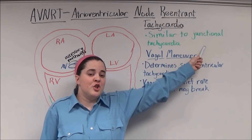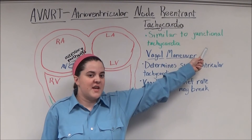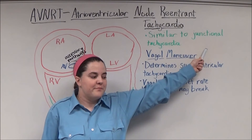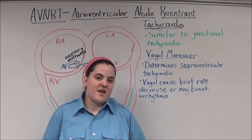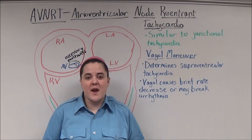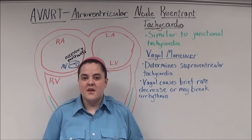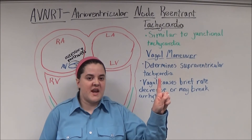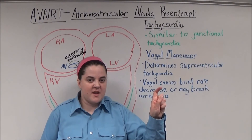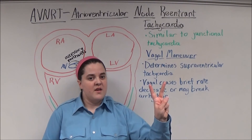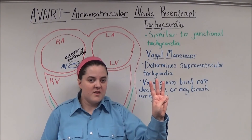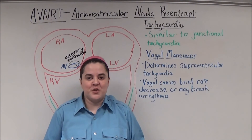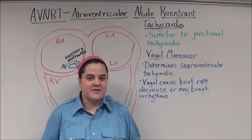AVNERT looks very similar to a junctional tachycardia. It's distinguishable from other tachycardias by looking at the rate. If the rate is over 180 beats per minute, the rhythm is regular, and the QRS complexes are narrow, then it's an AVNERT until proven otherwise.